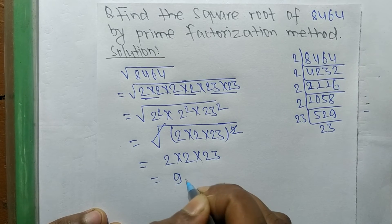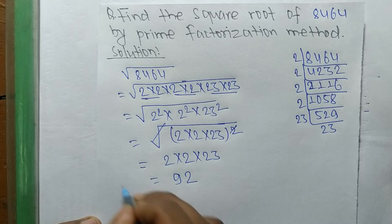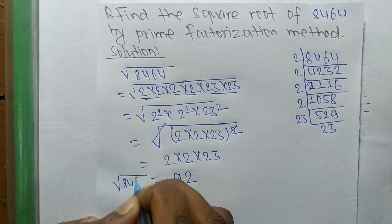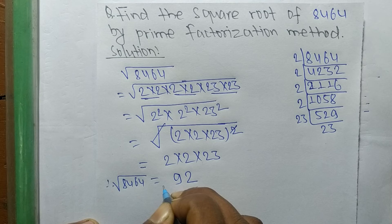The product of all these numbers is equal to 92. So the square root of 8464 is equal to 92.